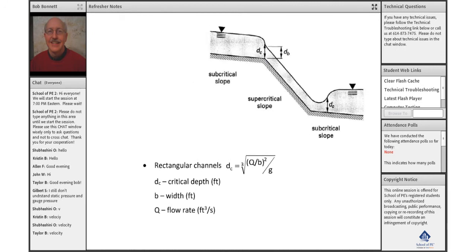The equation, which is on your page 6 in your PE Environmental Reference Handbook, is a critical depth for rectangular channels. It's listed here.